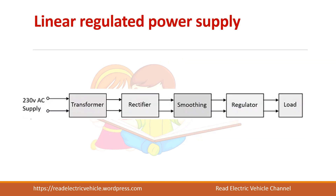Let us see the block diagram of the regulated power supply unit. We know the function of a regulated power supply unit is to provide a regulated output to the load — it means that even for variations in the load or in the supply, it has to provide a constant output to the load.